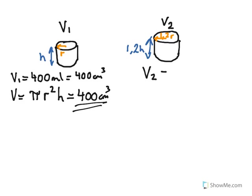What we know about the second tin, that the volume 2 of the second tin is going to be using exactly the same formula. It's going to be pi times the radius of tin 2 squared multiplied by the height of tin 2.